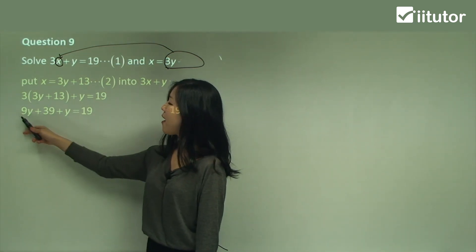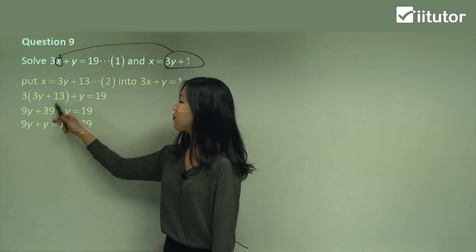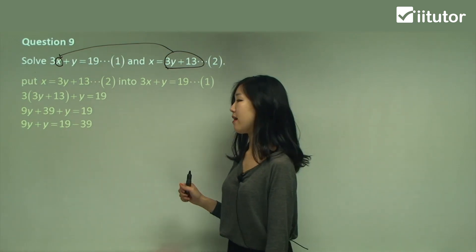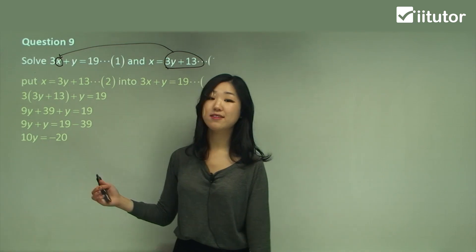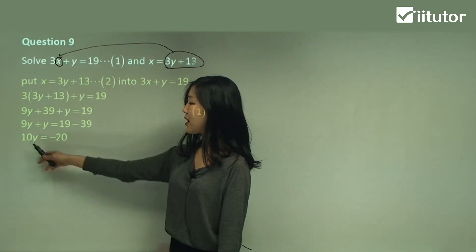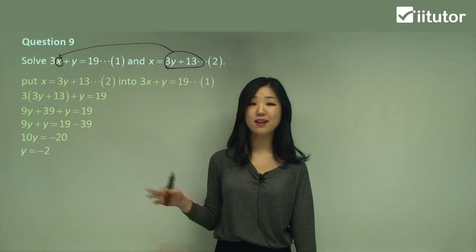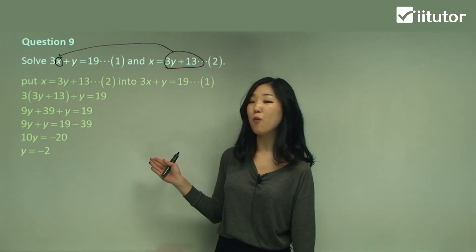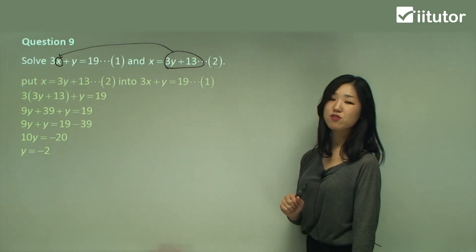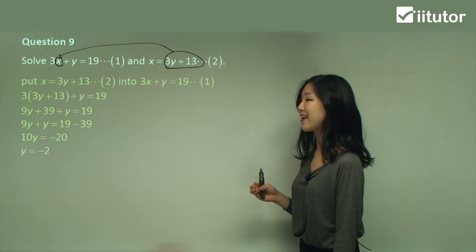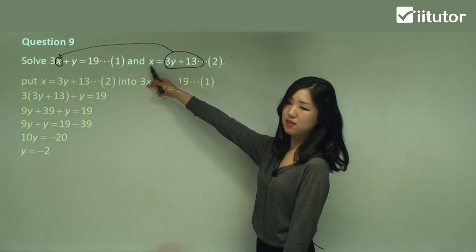Gather like terms. 9y plus y is on the left, and I move 39 to the other side making it negative 39. That gives 10y. 19 minus 39 is negative 20. Divide both sides by 10 — negative 20 divided by 10 is negative 2. So we found y first this time. Now substitute y equals negative 2 into equation 2 because x is already the subject there.